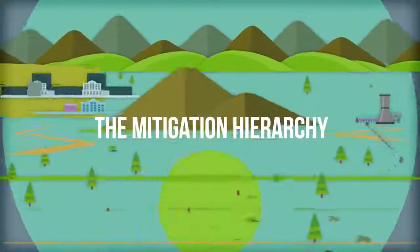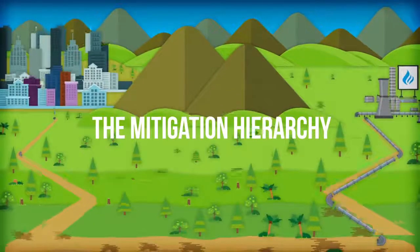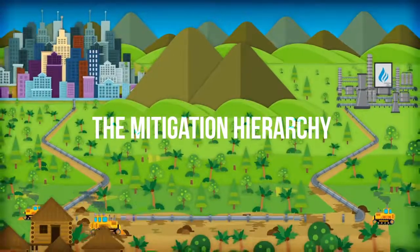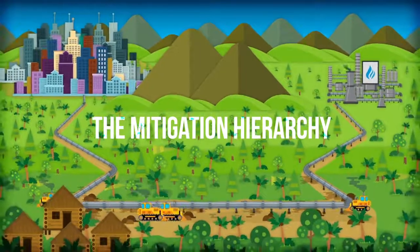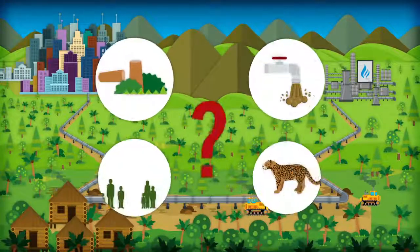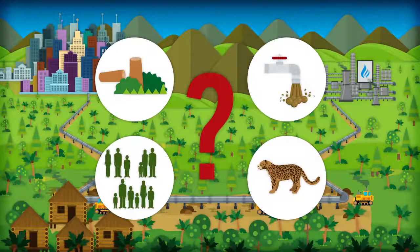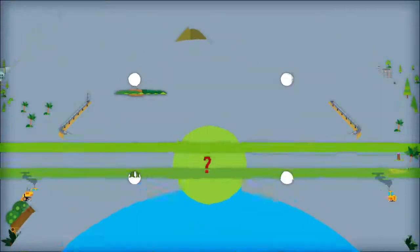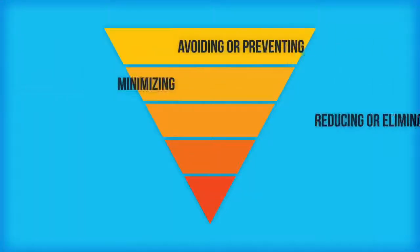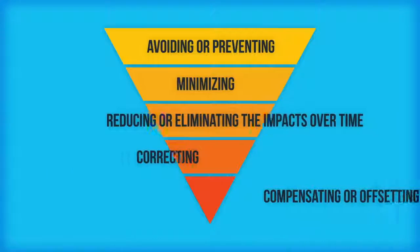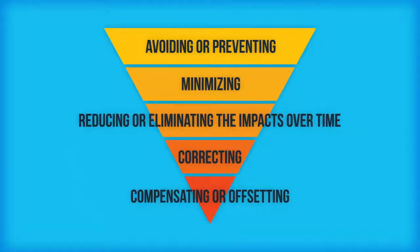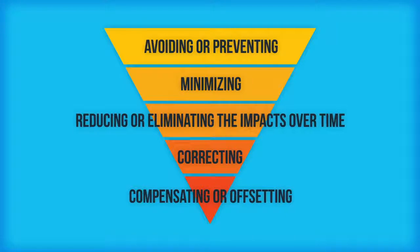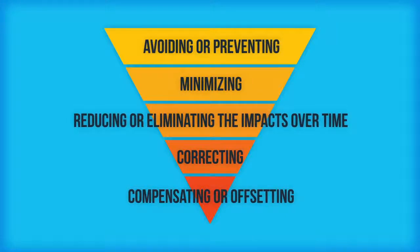Even with the best site selection and design, each of the alternatives to a proposed project will have potential environmental and social impacts. Thus, the identification of mitigation measures to avoid, minimize, reduce, or compensate for the negative impacts of a project is a key component in the EIA process.